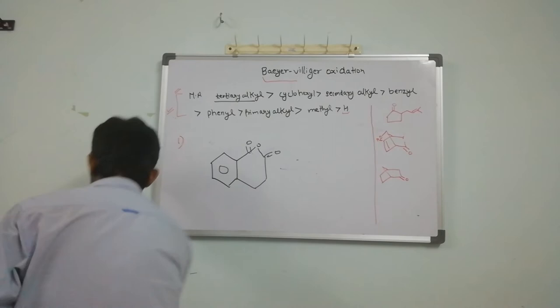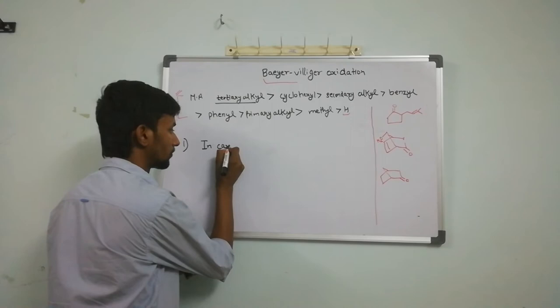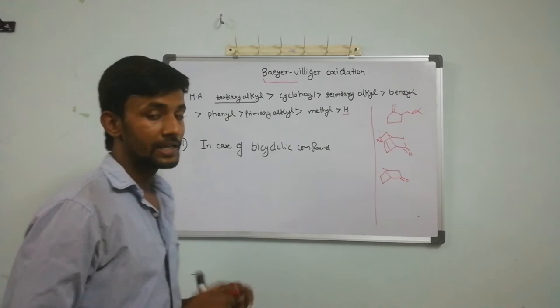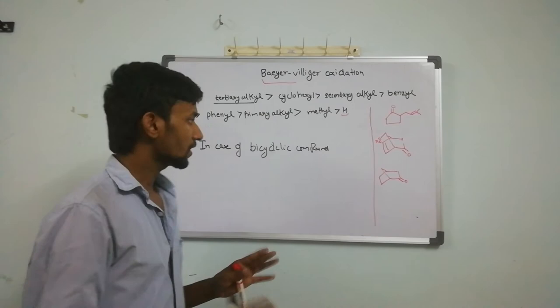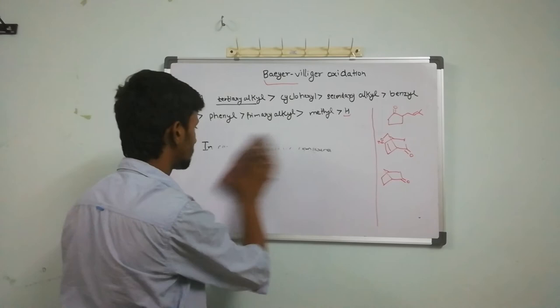Now let's discuss an exceptionally important case: the case of bicyclic compounds. In the case of bicyclic compounds, if there is steric hindrance — meaning there is a competition between steric hindrance and migratory aptitude — the product will be formed according to the steric hindrance factor. This is only valid in the case of bicyclic compounds. For more clarification, let's discuss some examples.